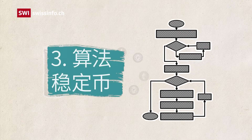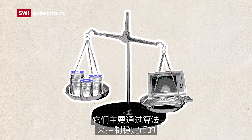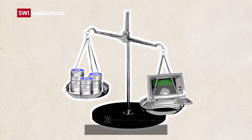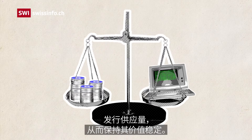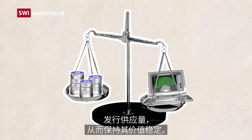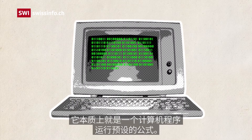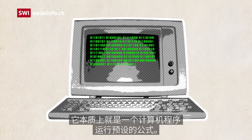3. Algorithmic stablecoins: these may or may not hold reserve assets. They aim to keep the stablecoin's value stable by controlling its supply through an algorithm — essentially a computer program running a pre-set formula.